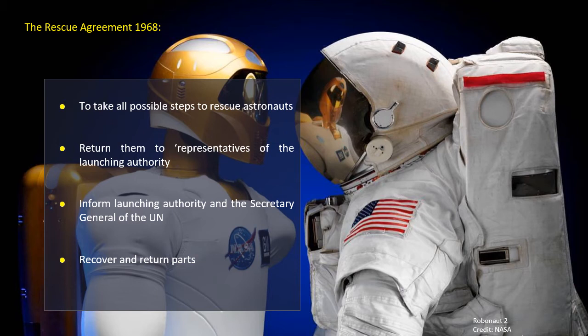The third treaty is the Rescue Agreement of 1968, which obligates a state to take all possible steps to rescue astronauts and return them to the representatives of the Launching Authority. States are also obliged to inform the Launching Authority and the Secretary-General of the United Nations of any astronauts under their jurisdiction as a result of an accident, distress, emergency, or unintended landing.